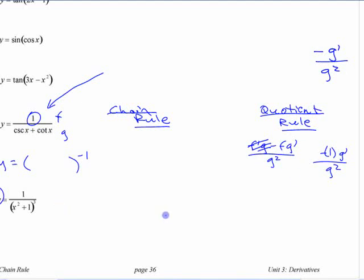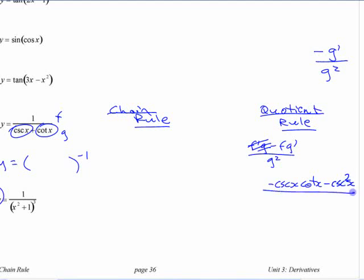So either way, whether you use the quotient rule or that simplified thing, you end up with, what do you end up with here? What's the derivative of that bottom function? Cosecant is minus cosecant cotangent. And cotangent is minus cosecant squared. And on the bottom, you have this cosecant plus cotangent squared, right? Like that.